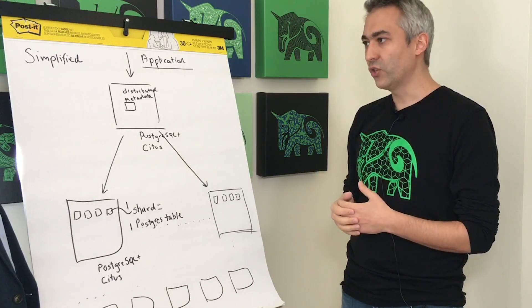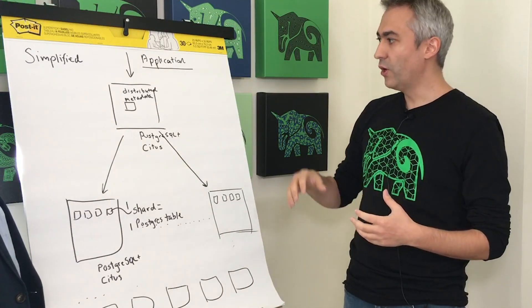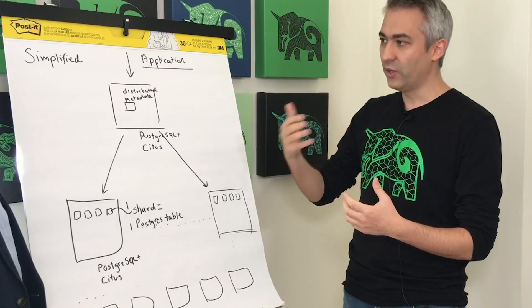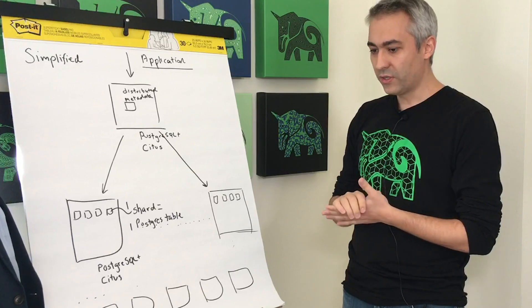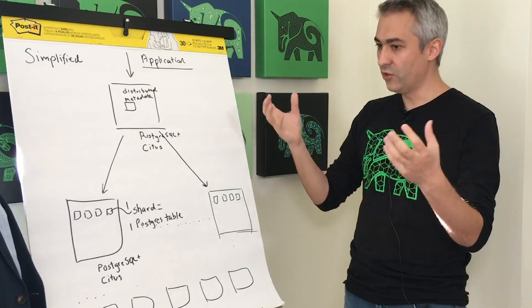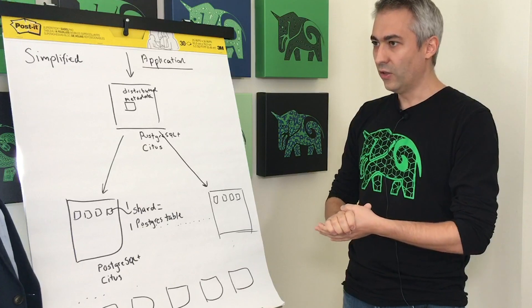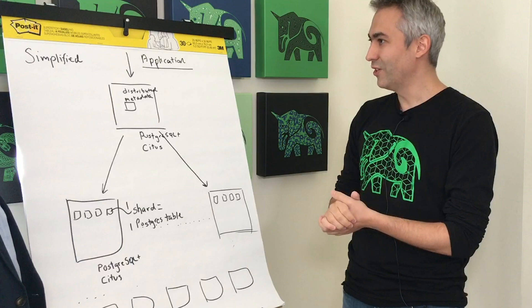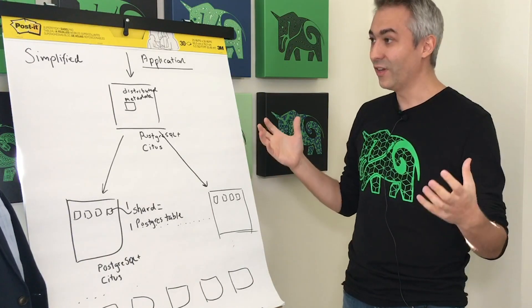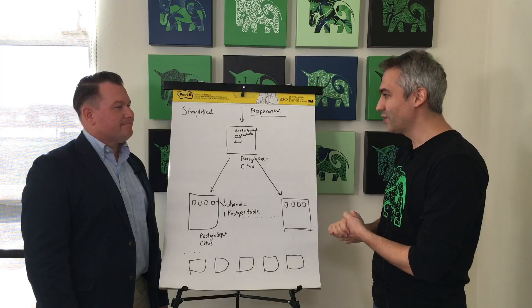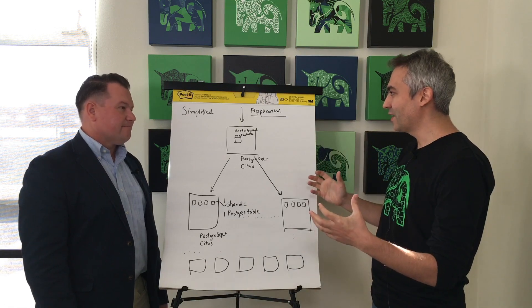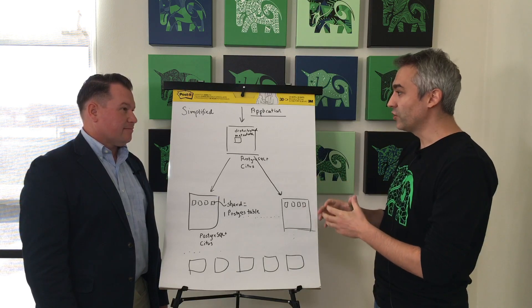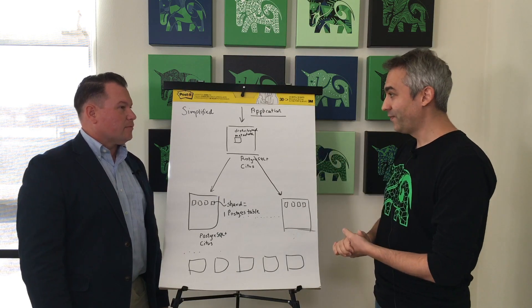Another application type that we see is what we call real-time analytics, where you need to ingest large volumes of data into your cluster and analyze that data in real time. Example, customers who use Citus that way, Algolia is one of them, where they're ingesting lots of data into the cluster and looking at that. One of our users, Microsoft, uses Citus in this way, where they're getting in a lot of events data from Windows devices. And then they ingest that data in real time and then they analyze that data in real time. So real-time analytical applications are another example application.